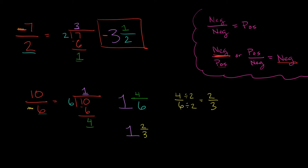So 10 over 6 reduces down to 1 and 2 thirds. But remember, this isn't just 10 over 6 — this is 10 over negative 6. So is that answer positive or negative? We have a positive number over a negative number, so our answer is going to be negative. So this is negative 1 and 2 thirds.